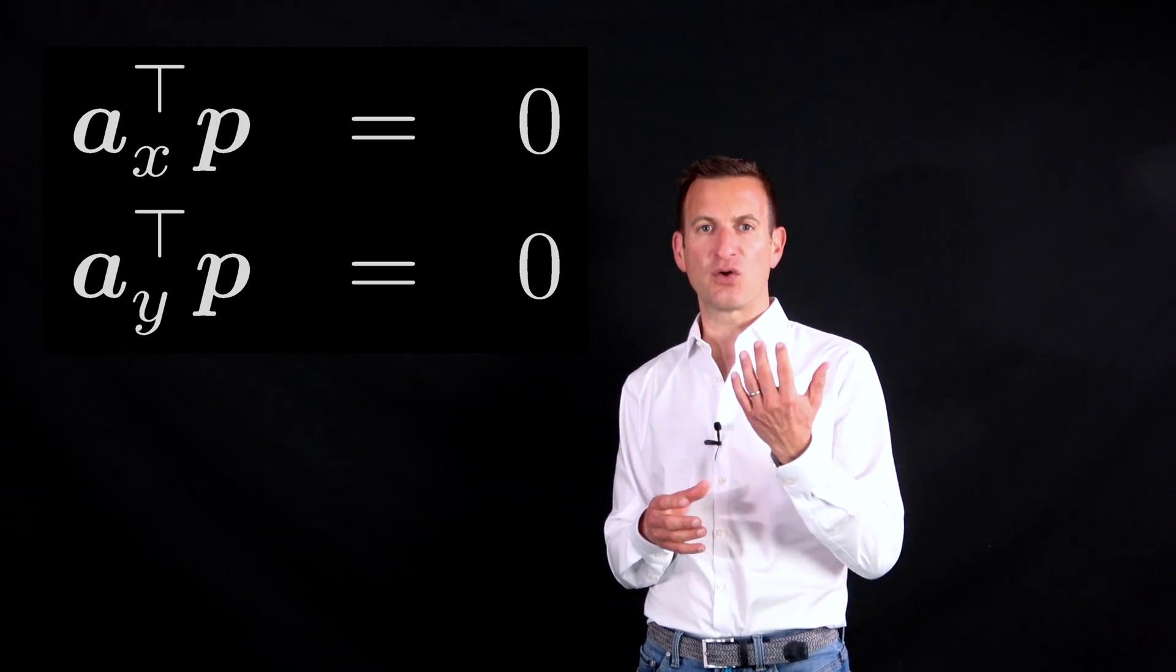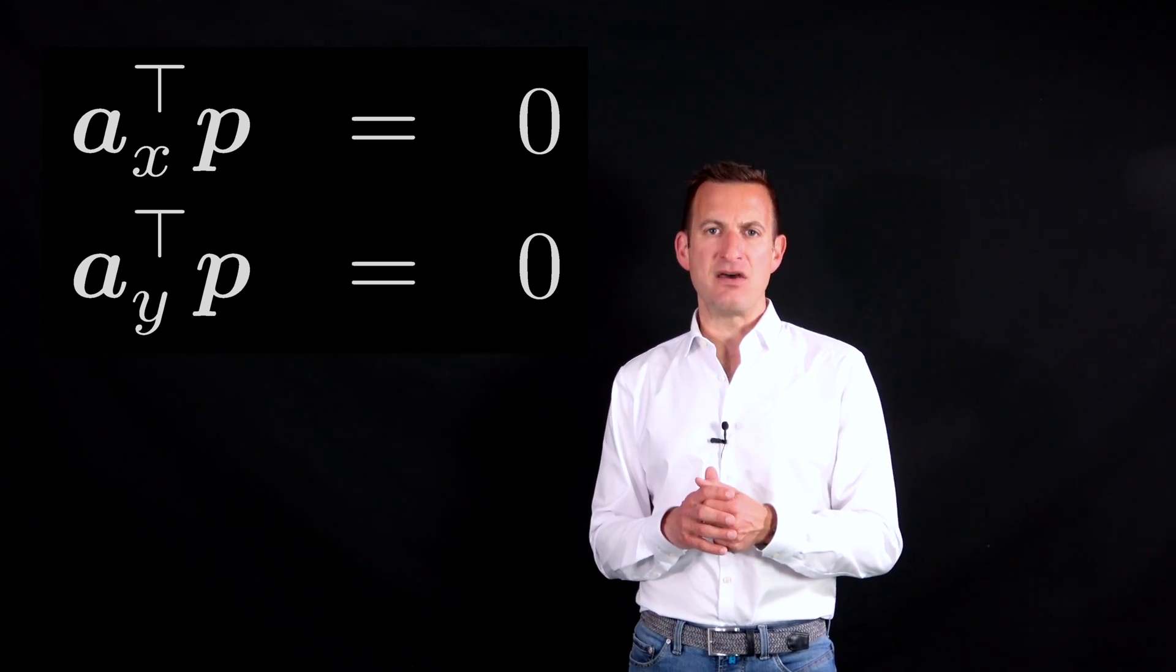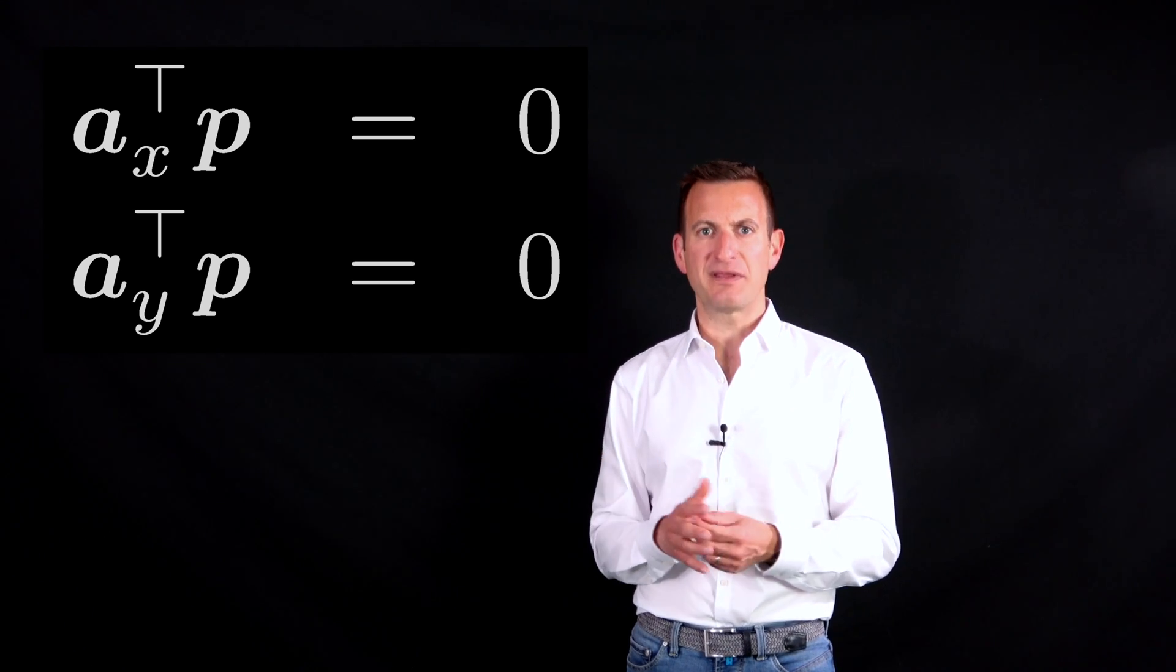And this equation contains a so-called coefficient vector, let's call it A, and a vector of unknowns P. Both are 12 dimensional.